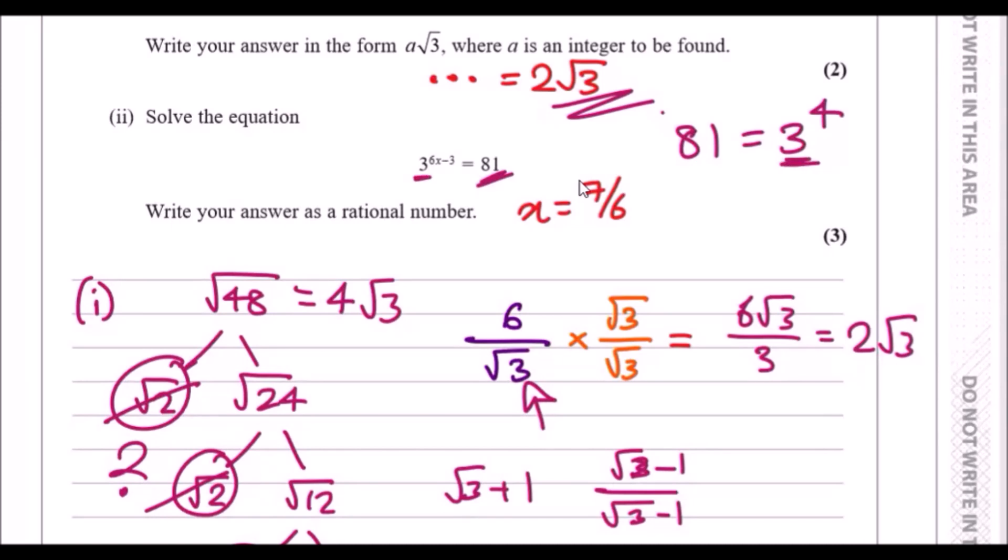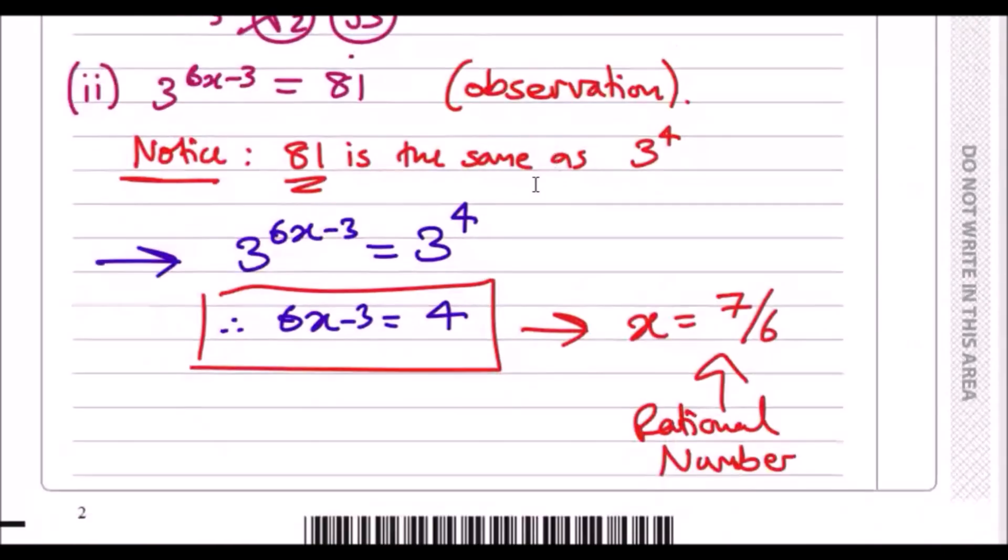So we need to work in bases of 3. Essentially we have 3 to power 6x minus 3 equals 3 to power 4. Because we've got the same basis, we can assume that this 4 must be equal to 6x minus 3, and that's exactly what we get here.